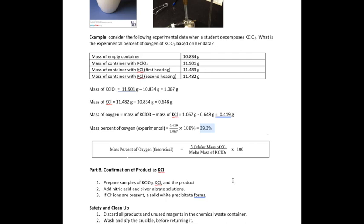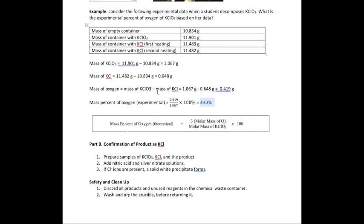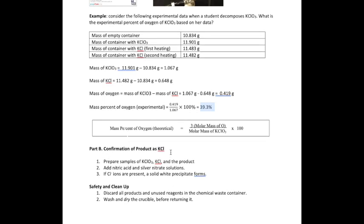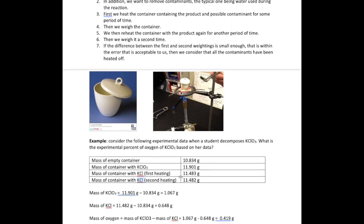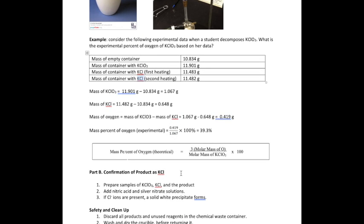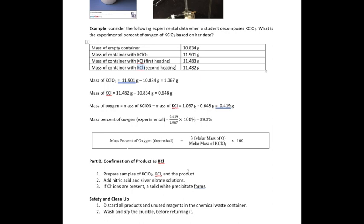Part B is to confirm that the product you get after all this heating—which we call the residue—is really KCl. We're assuming it is, but we don't know for sure. In chemistry or any science, if you're not sure, you're going to confirm by doing some kind of test.